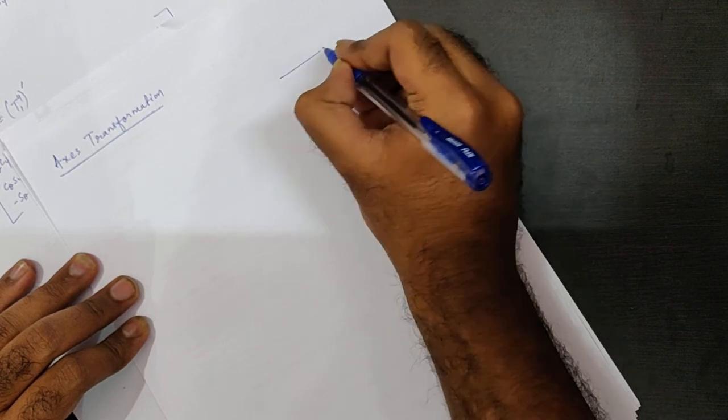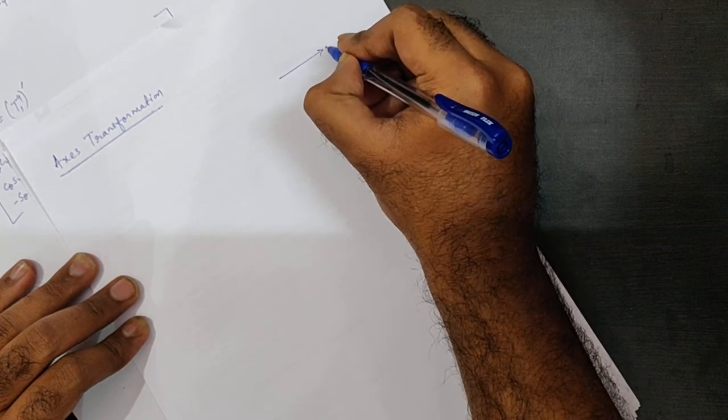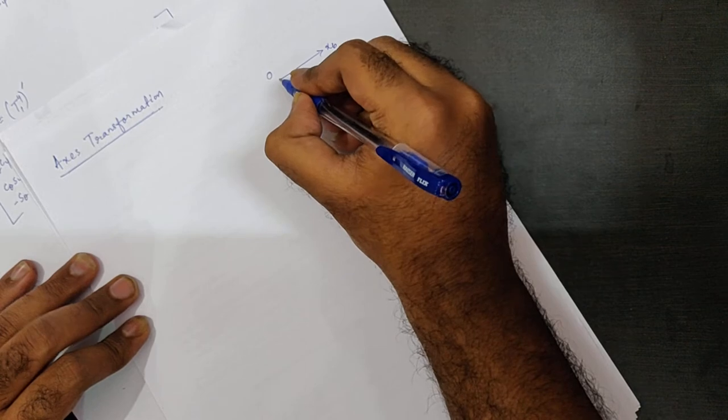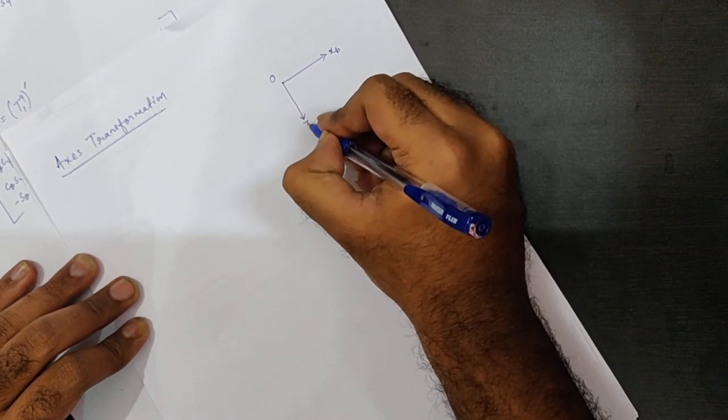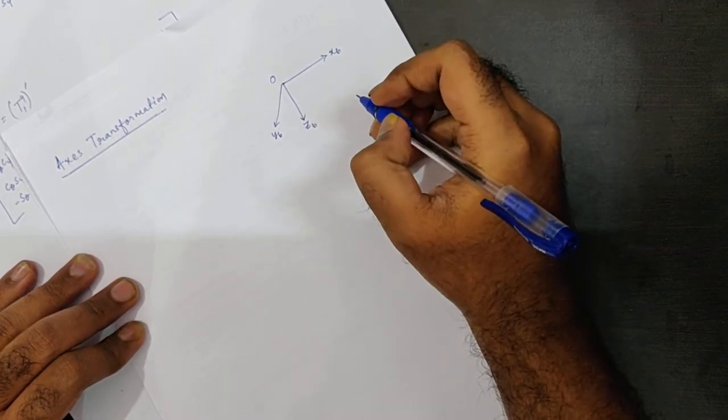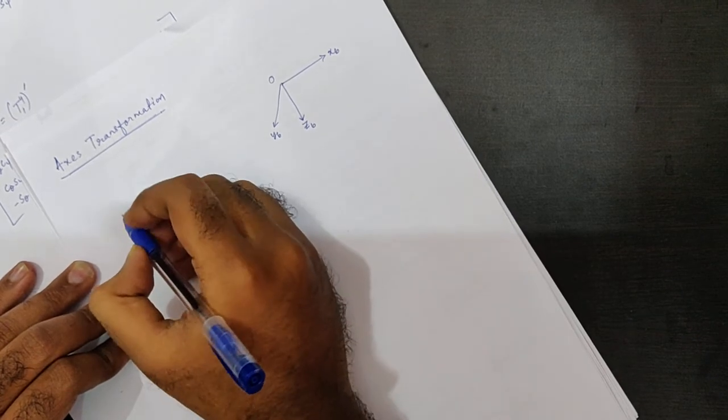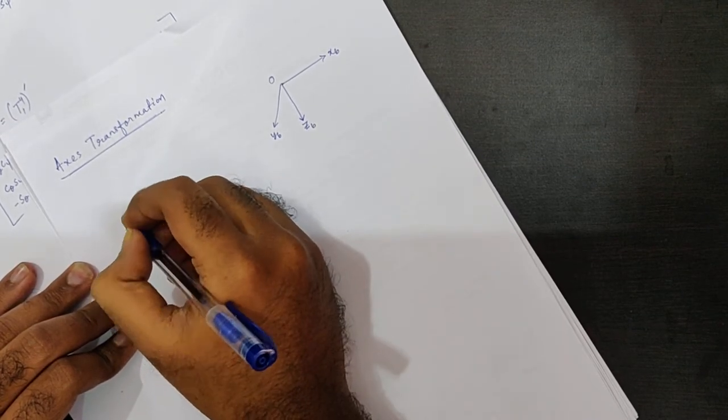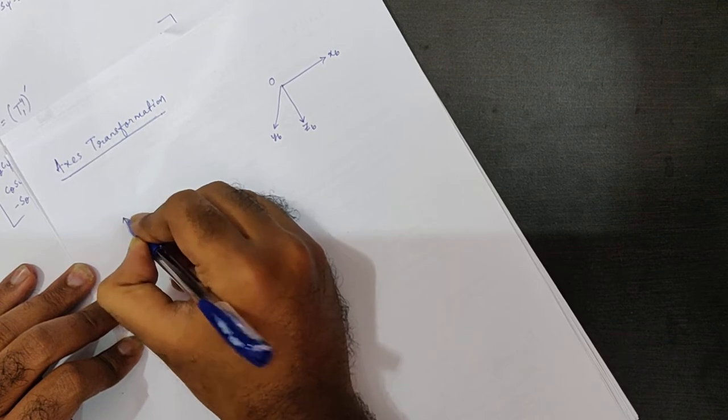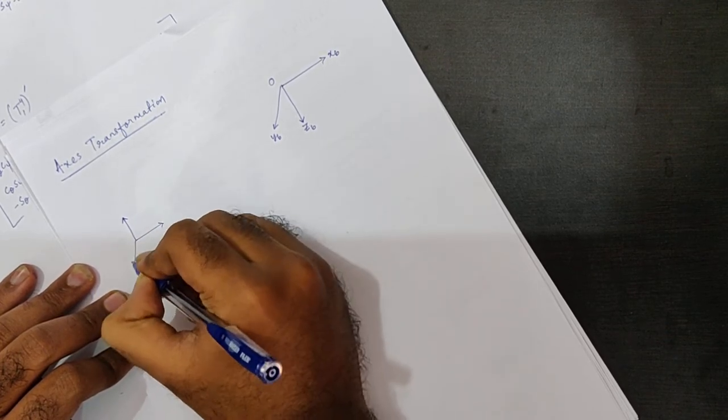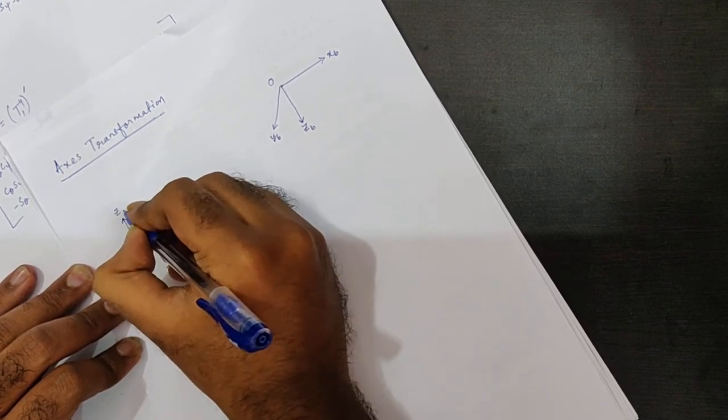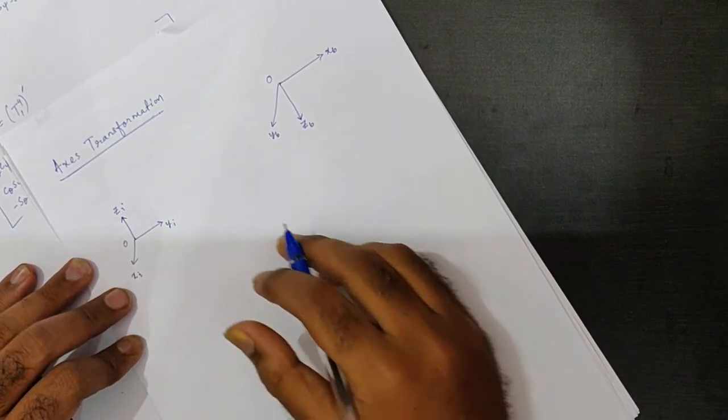Let me put out the axis systems as we had discussed earlier. So this is our body fixed coordinate system, that is XB. This is the origin, and this is ZB and YB. We also consider one inertial frame of reference, which is XI, YI, and ZI.